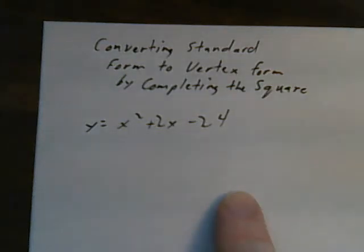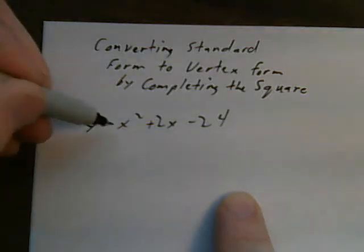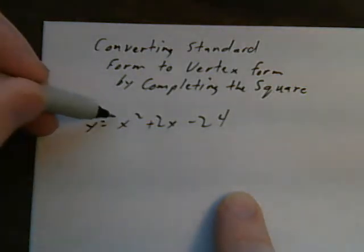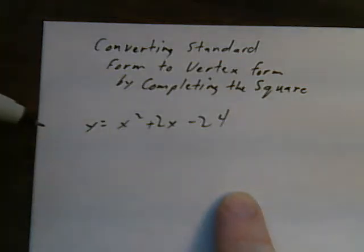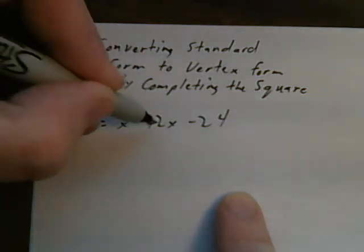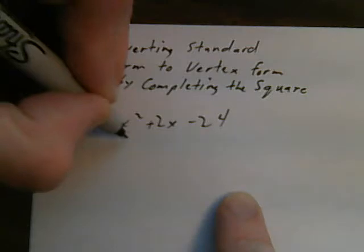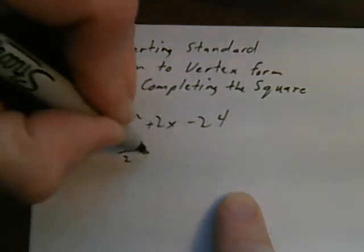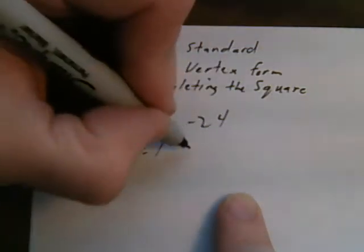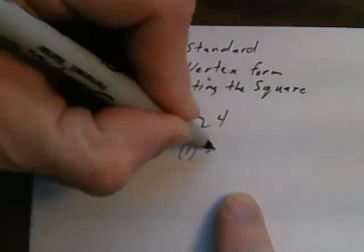To do this the first thing you do is you have to have a 1 in front of the x squared. Here we do. If you don't see anything there you know there's a 1 there. What I do is I divide my middle term by 2. So 2 divided by 2 is 1 and then I square that term. 1 squared equals 1.